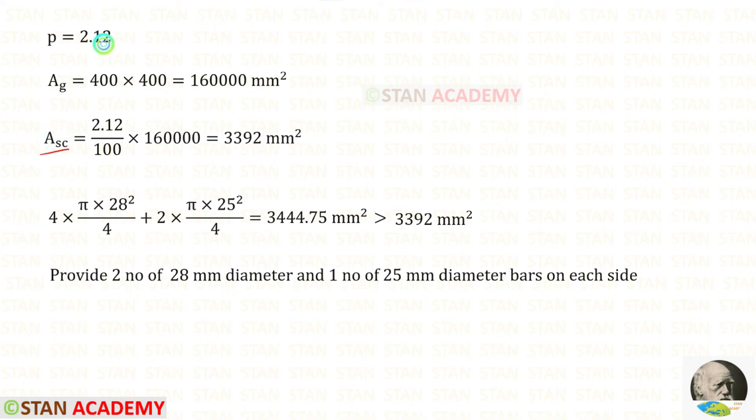Now let us find the area of the steel. We know the percentage 2.12. 2.12 upon 100 into the gross area. We will get the area of the steel.